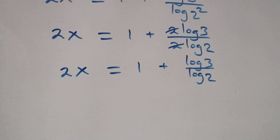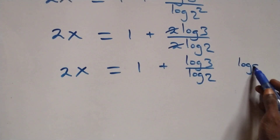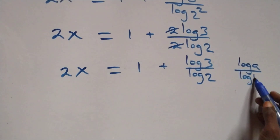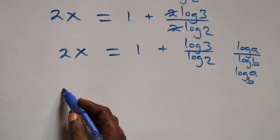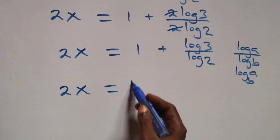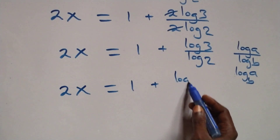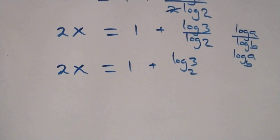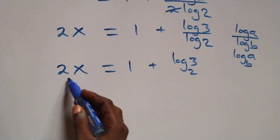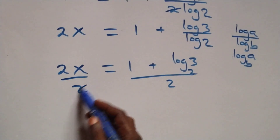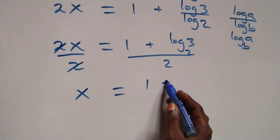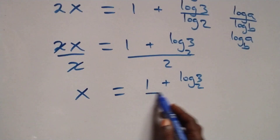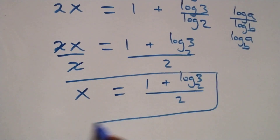From here we apply the change of base formula: when we have log a over log b, this is the same as log a to base b. So what we have becomes 2x equals 1 plus log 3 base 2. Dividing both sides by 2, we get x equals 1 plus log 3 base 2, all over 2.